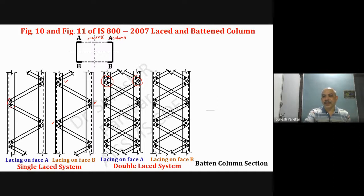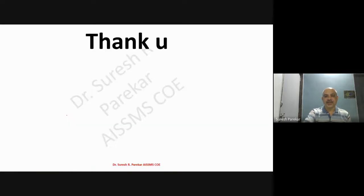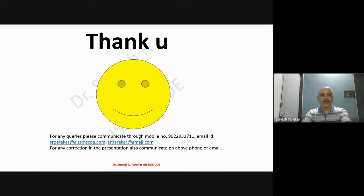For the batten column section, we have channels placed face to face, connected by bolts — these are the batten plates. These are all the diagrams you have to plot in sheet number three of Design of Steel Structures. Thank you, today we will stop here. Next time we will see sheet number four.